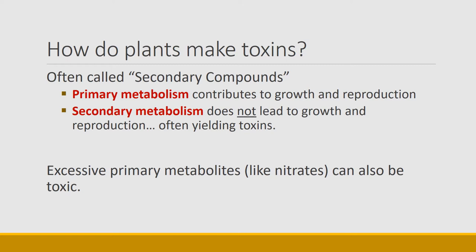So how do plants make toxins? I'm going to use the term secondary compounds. Primary metabolism contributes to growth and reproduction of the plant — the growth and the production of seeds. Secondary metabolism is a whole set of metabolic pathways that do not lead to growth and reproduction; they yield toxins oftentimes. That's why we call them secondary metabolites or secondary compounds. Don't forget that some primary metabolites, such as nitrates, are part of primary metabolism but can also be toxic in high doses.